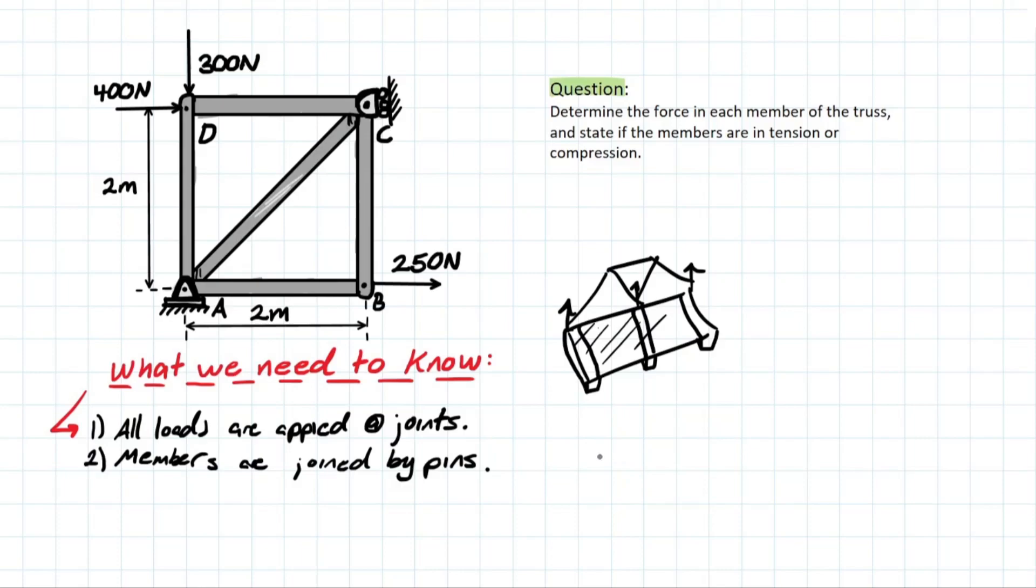So what does that leave us with? That leaves us with members that look something like this. We have two joints at the end here with loads applied at the joints. And if we are pulling this member in this direction, we are understanding that we're creating a tension on this member. This member is going to be elongated if it wasn't rigid. But if we went in the opposite direction, we would actually be creating a compressive force shortening this member.